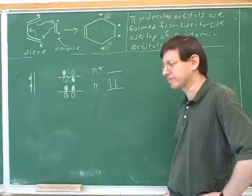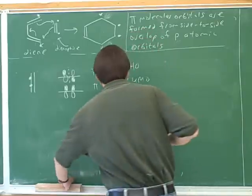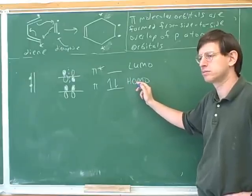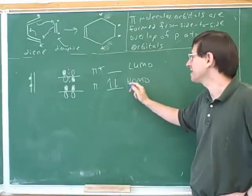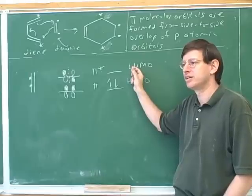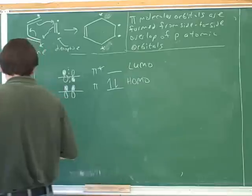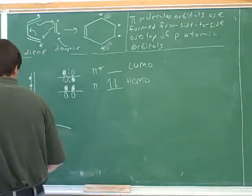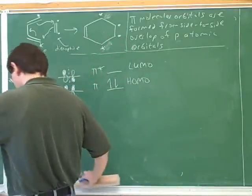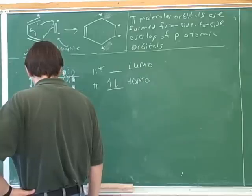Have you heard the terms HOMO and LUMO? HOMO stands for Highest Occupied Molecular Orbital — this is the HOMO because it's occupied. LUMO stands for Lowest Unoccupied Molecular Orbital — this is the LUMO because it is unoccupied.